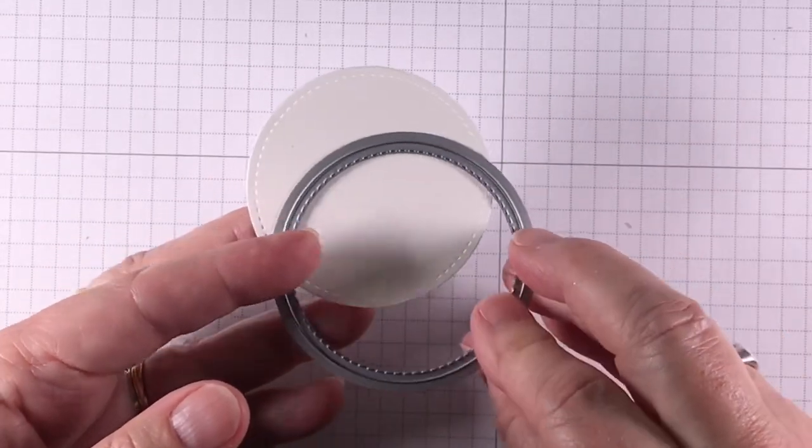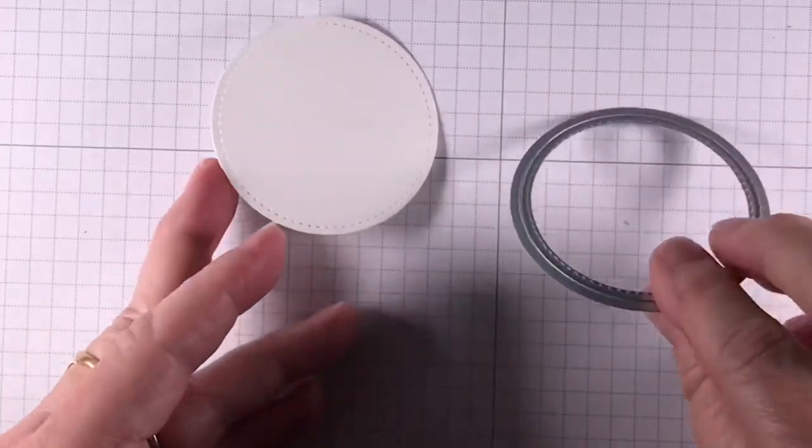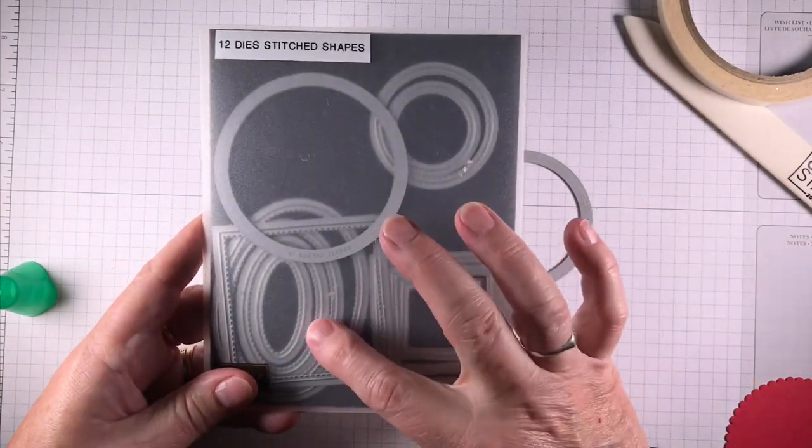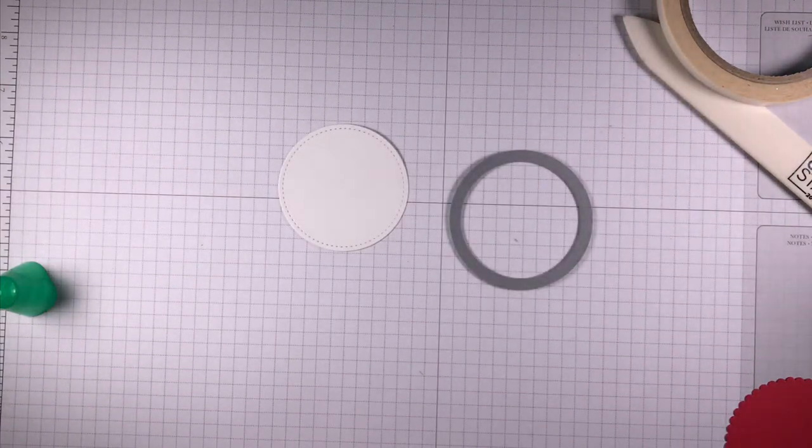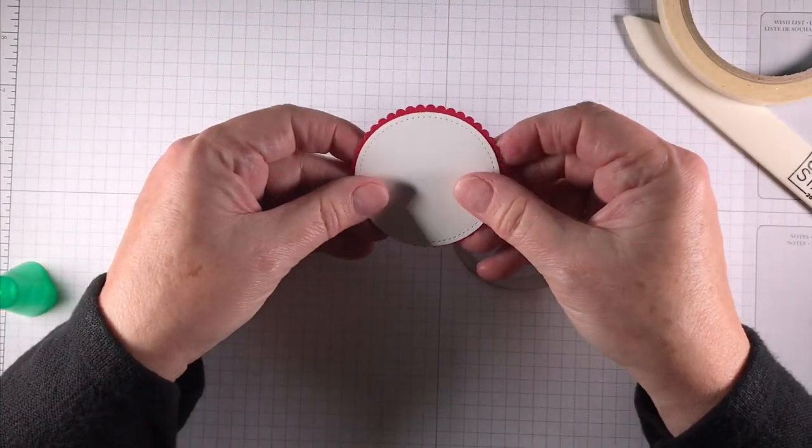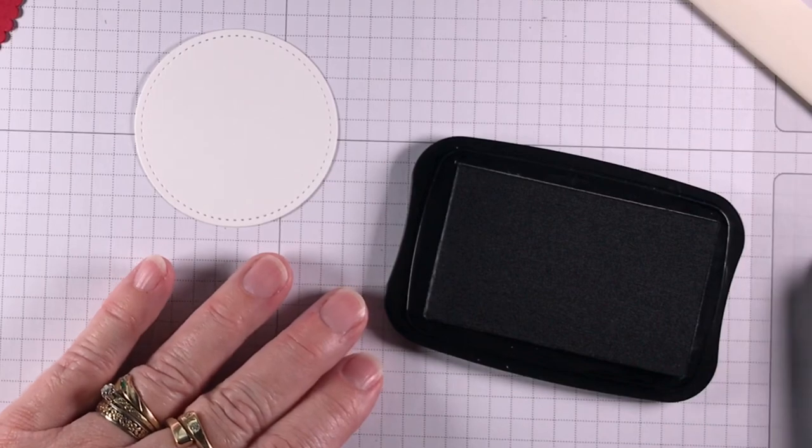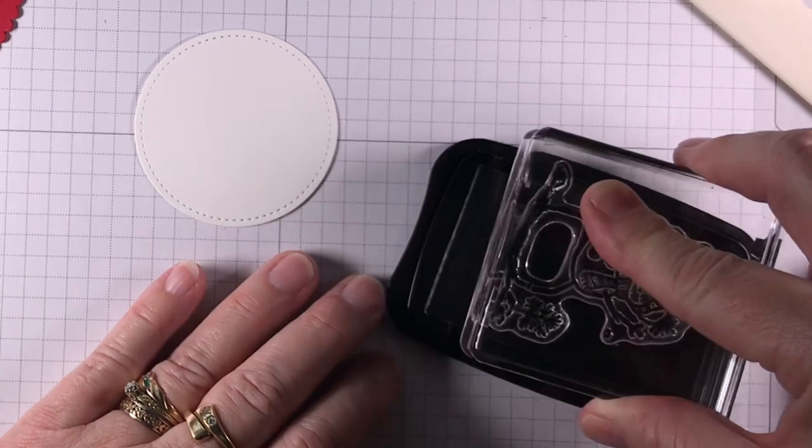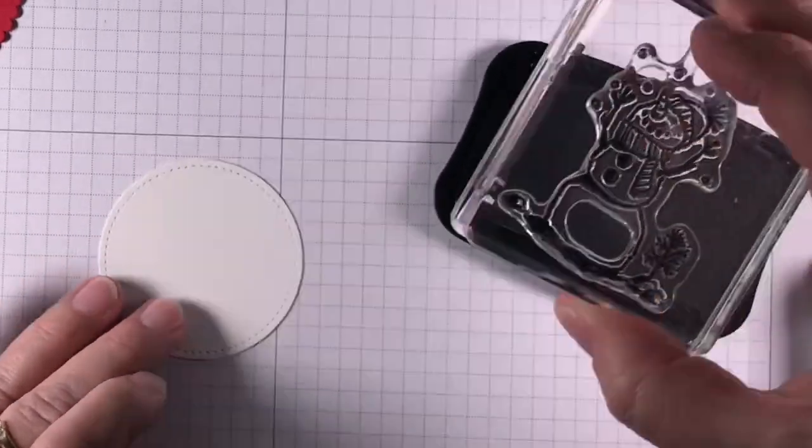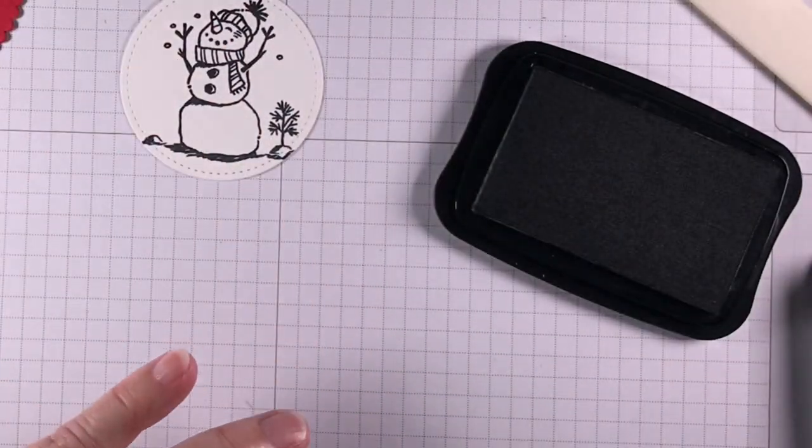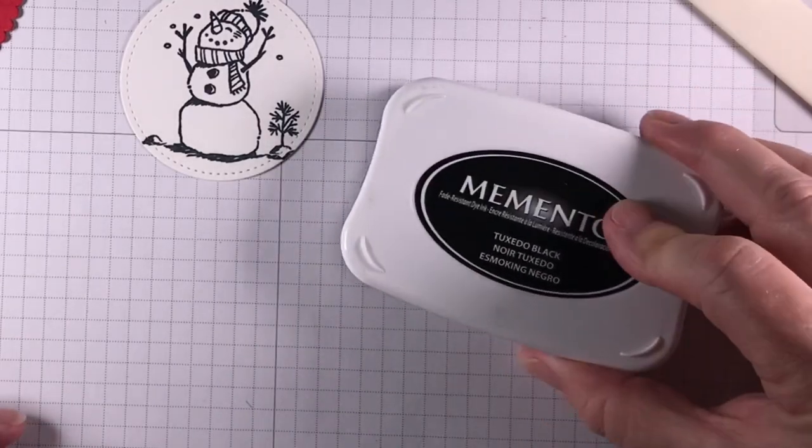So I'm going to go on to the next step. Now I have pre-cut our circle using the Stitched Shape circles. I could have used a circle from the layering circles, but I love this stitched area. And the Stitched Shapes have circles, squares, and ovals, and these layer very nicely with the layering circles. So they're a great complement to each other. And you can see I've got one of the layering circle scallops. I'm just going to put under here, but I'll need to stamp that first with our Memento ink. So I'm taking our snowman from the Let It Snow and I'm going to just stamp him on here like this. You get such a nice crisp black with the Memento Tuxedo Black ink.